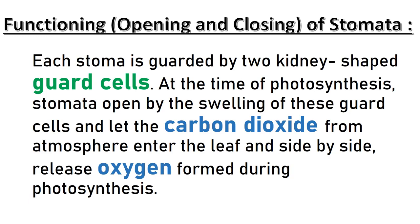Let us now learn the functioning, that is the opening and closing of stomata. The singular form of stomata is called stoma. Each stoma is guarded by two kidney-shaped guard cells. At the time of photosynthesis, stomata open by the swelling of these guard cells and let the carbon dioxide from the atmosphere enter the leaves, and side by side release oxygen formed during photosynthesis.